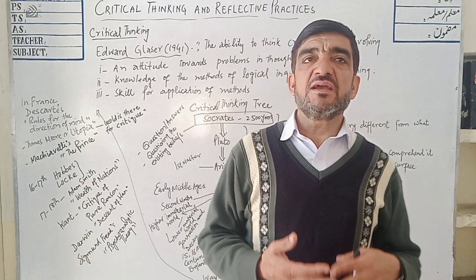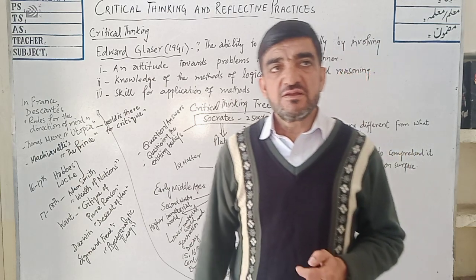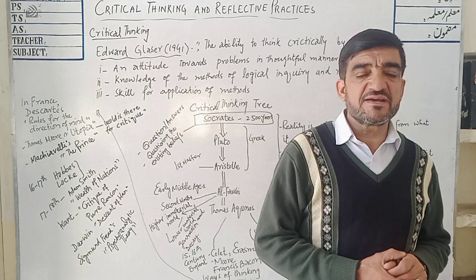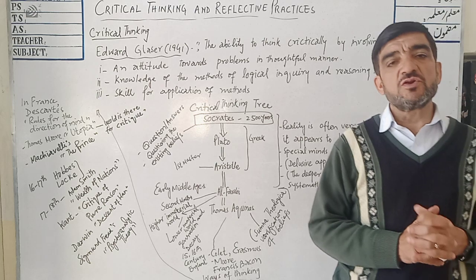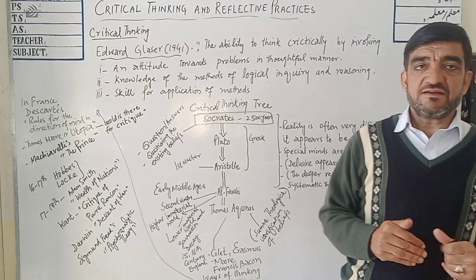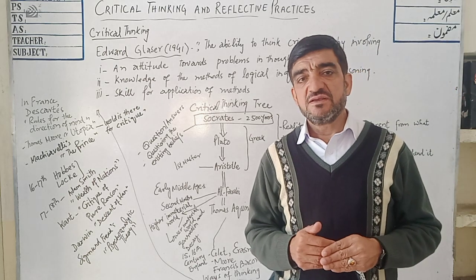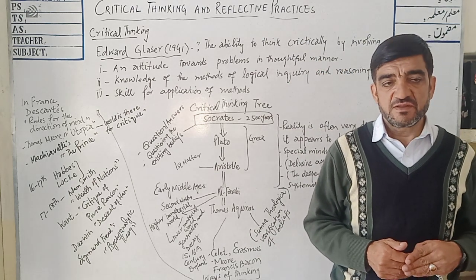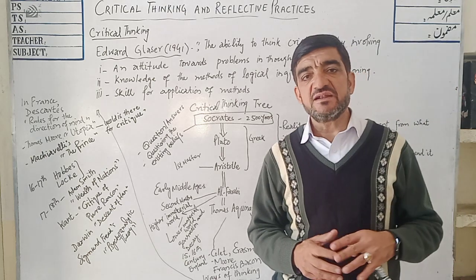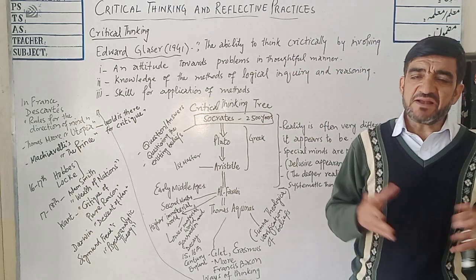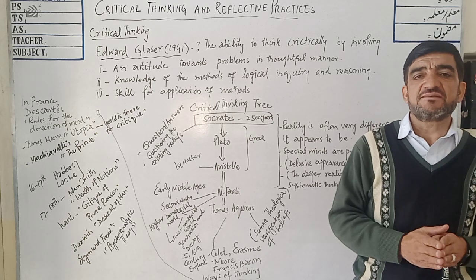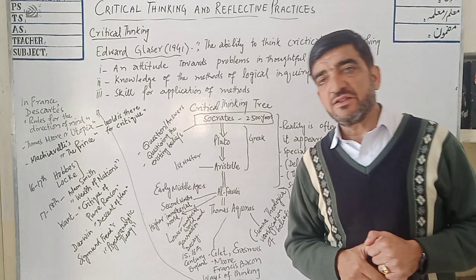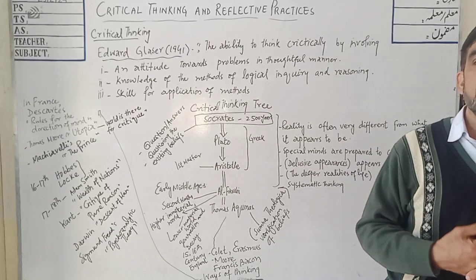We discussed perceptual thinking, concrete thinking, non-perceptual, abstract, critical, divergent and convergent types of thinking. Today we are going to discuss the most important type of thinking, known as critical thinking. This is a taught subject for professional degrees — B.A., M.A., etc. — and the name of the subject is critical thinking and reflective practices. Reflective practices is the second part, which we will discuss later. Today we are just going to have a brief introduction to critical thinking.